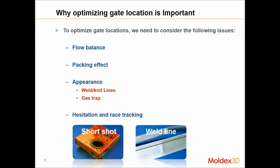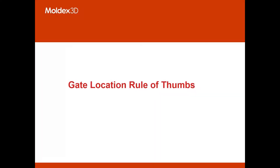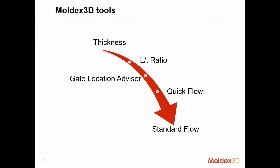Another consideration is weld lines or gate trap, which will cause part surface quality issues, like hesitation as well. Now let's take a look at the rule of thumb for gate locations.